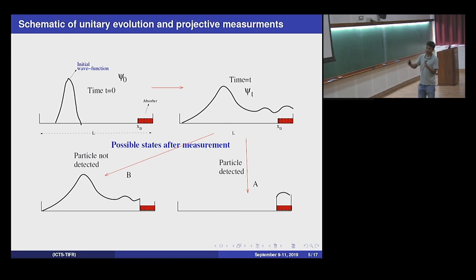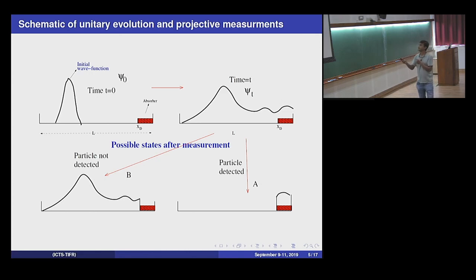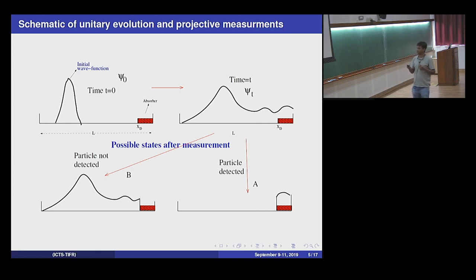After time tau, the wave function has evolved into some state. If I make a measurement — asking 'is the particle in this region, has it arrived?' — there are two possibilities. I may find it in the region, in which case the wave function collapses to a normalized state projected into that region. But it's also possible I don't find the particle, in which case the state actually changes: it's projected out into a state that has no support in that region. The important point is that even if I don't find the particle, it's in a different state.